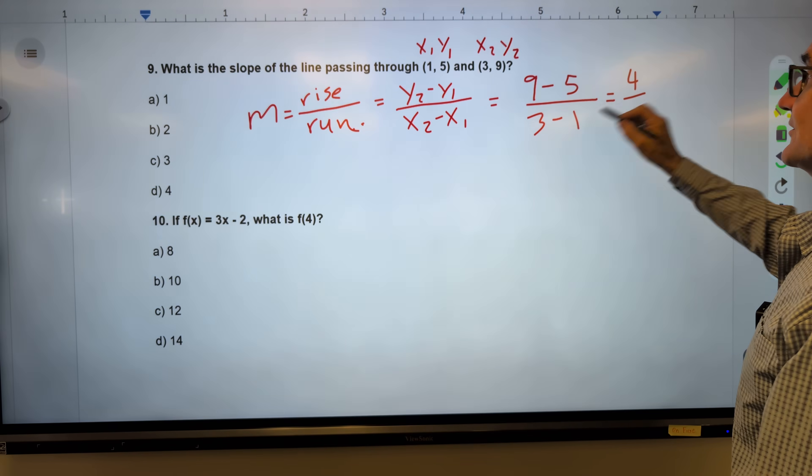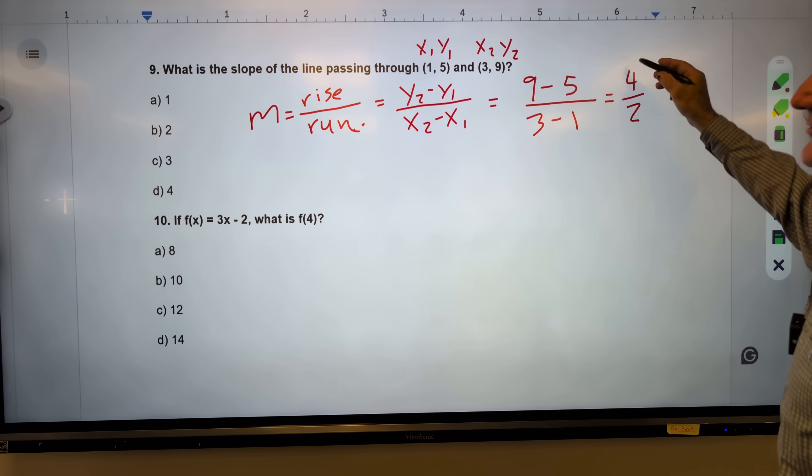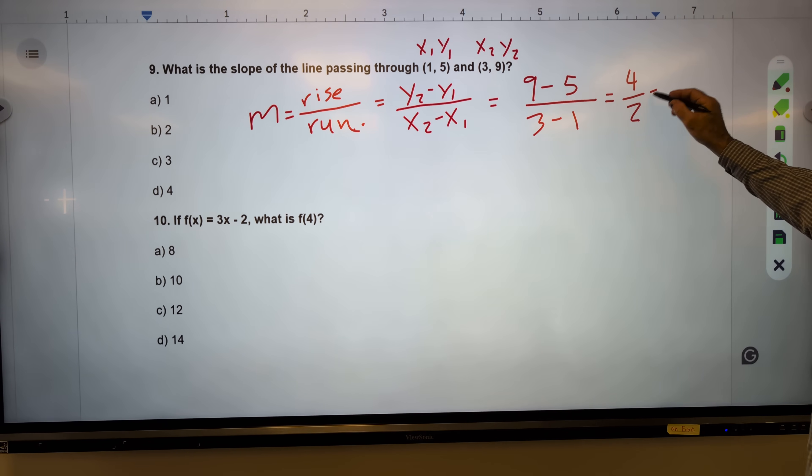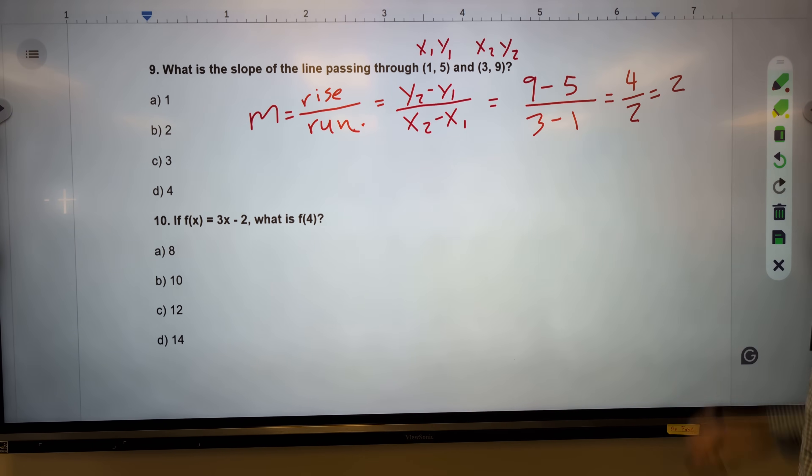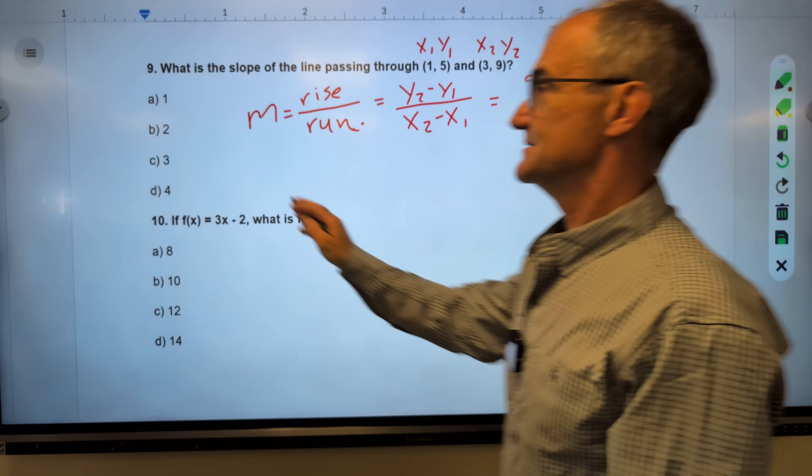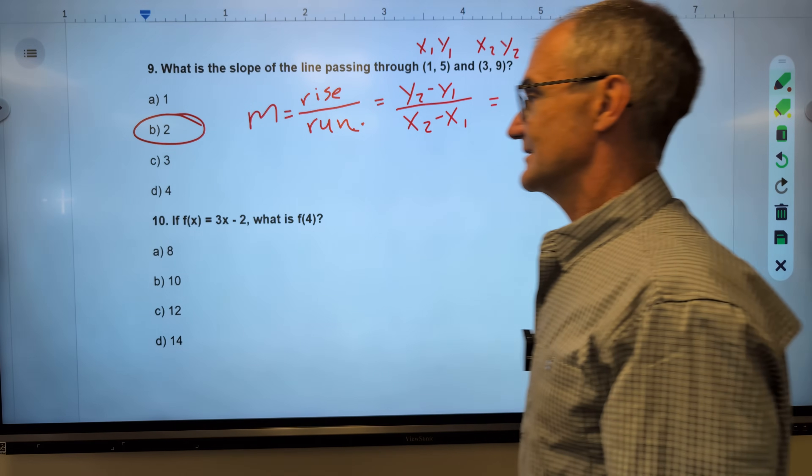I have my equation here. Y2 is 9 minus y1 5 over 3 minus 1. 9 minus 5 is 4. 3 minus 1 is 2. My slope is 4 over 2. That reduces to 2 over 1 or just 2. Correct answer, answer B right there.